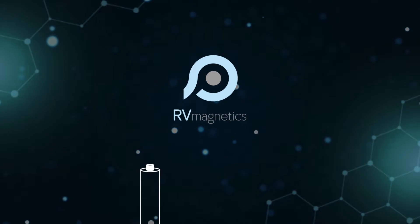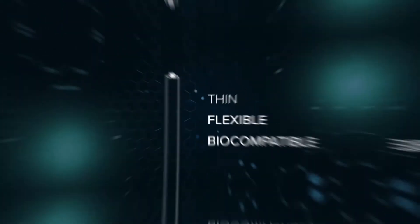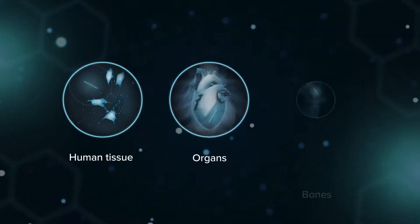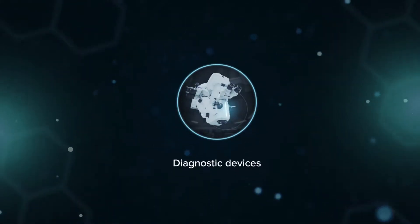RV Magnetics introduces a thin, flexible and biocompatible sensor, micro-wire, that can be embedded inside the human body and diagnostic devices.